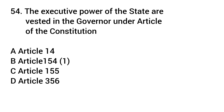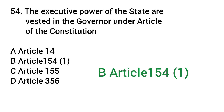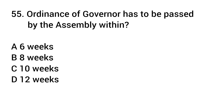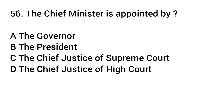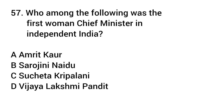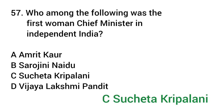The executive powers of the state are vested in the Governor under which Article of the Constitution? Answer: Article 154(1). An Ordinance of the Governor has to be passed by the Assembly within? Answer: Six weeks. The Chief Minister is appointed by? Answer: The Governor. Who among the following was the first woman Chief Minister in independent India? Answer: Sucheta Kripalani.